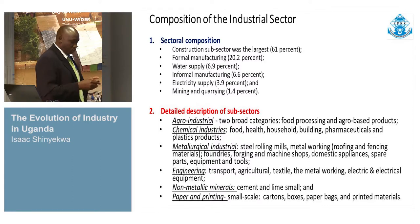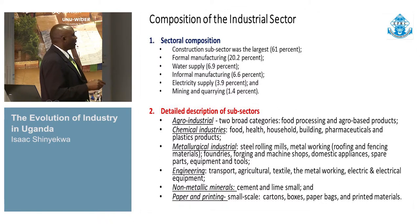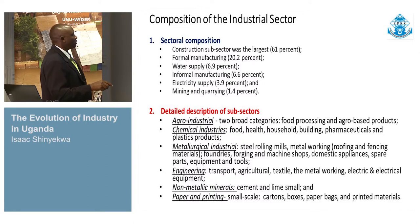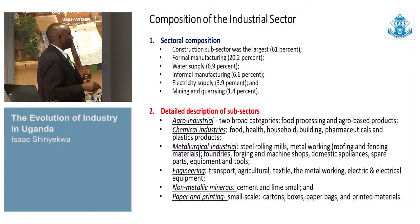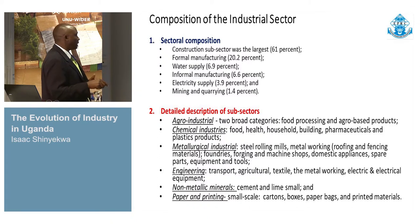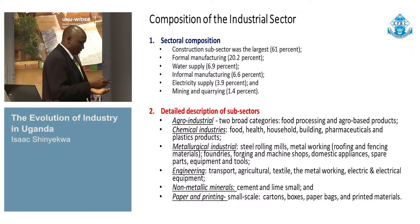Looking at the composition of the industrial sector in Uganda, it comprises construction, water, formal manufacturing, electricity, and mining. Construction is the booming thing — it is the sunrise industry within the industrial sector. Manufacturing takes about 20% in terms of composition. In terms of the detailed subsector discussion, the undertakings include agro-processing, chemical, metallurgical industry, engineering, non-metallurgical industry, and paper. So that is roughly the composition.